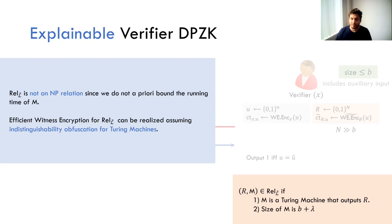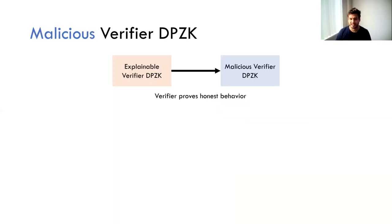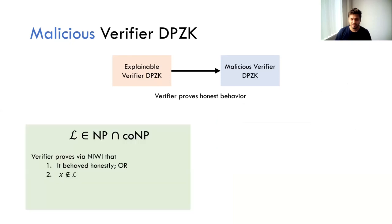Given explainable verifier DPZK, how do we get to the malicious verifier setting? The idea is simple: the verifier proves honest behavior. As long as the verifier proves it generated both ciphertexts correctly, we can use the same simulator as for explainable verifier DPZK. For languages in NP intersect co-NP, the verifier proves using a non-interactive witness indistinguishable proof that either it behaved honestly or the statement x is not in the language. Since L is also in co-NP, x not in the language has a witness. For zero knowledge, the second statement is false for x in L, so an accepting proof must indicate the verifier behaved honestly.